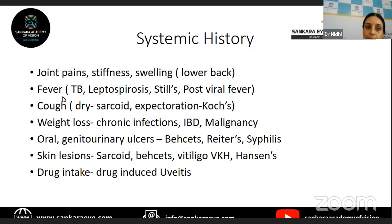History of fever is important in patients with tuberculosis and leptospirosis. Systemic JIA patients also present with fever. Viral fevers like Dengue, Chikungunya, and West Nile virus can all also be followed by development of uveitis. Taking a proper history of fever is important.